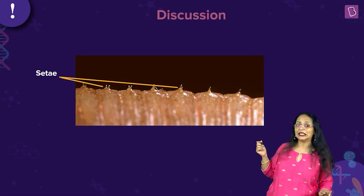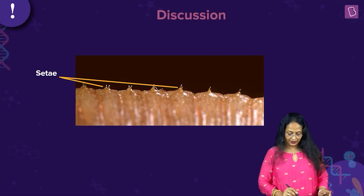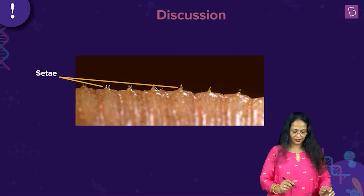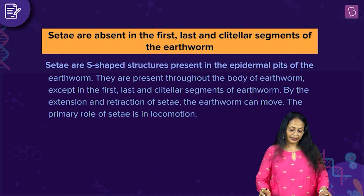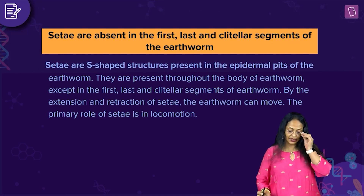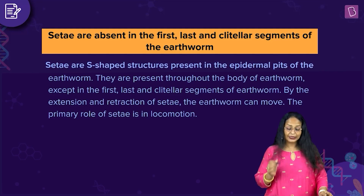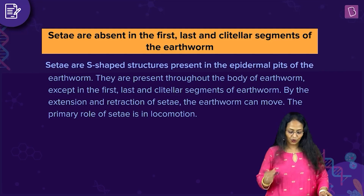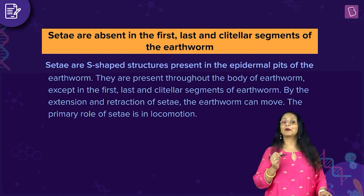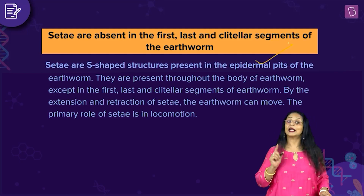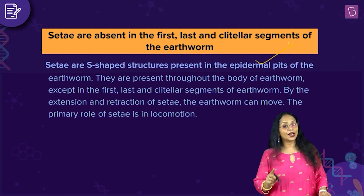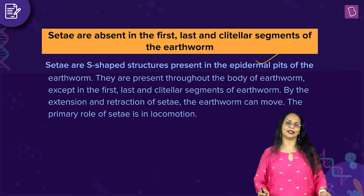If you look carefully, you can see the setae found in the epidermal region — they are the minute S-shaped structures. Setae are S-shaped structures present in the epidermal pits of the earthworm. They are present throughout the body of the earthworm except in the first, the last, and the clitular segments. By the extension and retraction of setae, the earthworm can move. The primary role of setae is locomotion. So the right answer is: setae are absent in the first, the last, and the clitular segments of the earthworm.